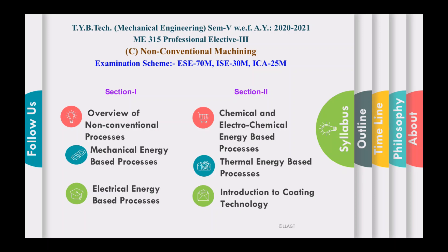In this entire course we are going to cover six units. In section one we cover three units, and in section two another three units. Unit one is an overview of non-conventional machining processes. Unit two is mechanical energy based processes. Unit three is electrical energy based processes. Unit four is chemical and electrochemical energy based processes. Unit five is thermal energy based processes. Unit six is an introduction to coating technology.